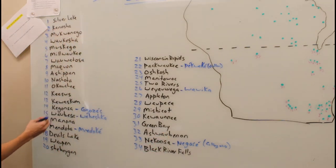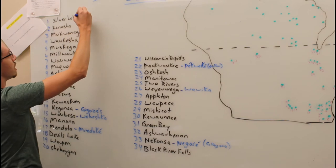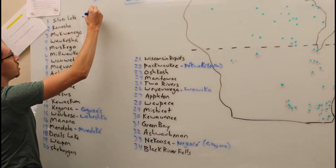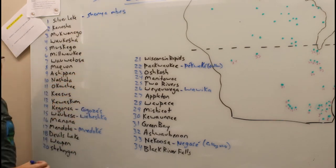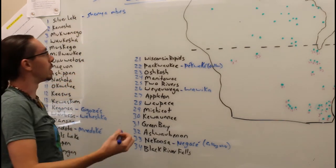Number one here, we have Silver Lake, and that is called Xonyambes. Xonyambes literally means Silver Lake or Money Lake.